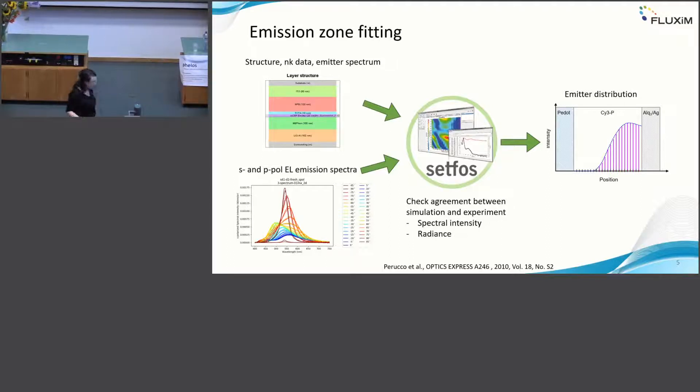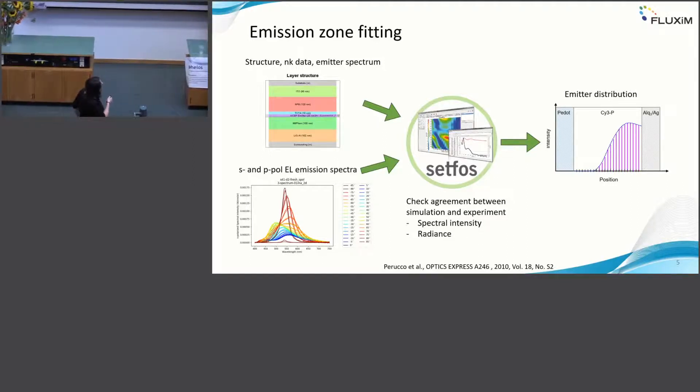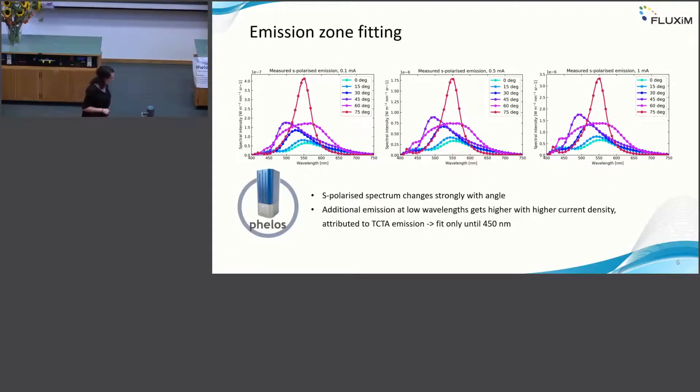Next thing would be to look at the full OLED and look at the emission zone. And this is how it works. You give in the stack definitions. Here are all the layers. Then you also feed in the target. This is the angular emission spectrum in S and P polarization. Then you need to also know the NK data and the emitter spectrum. So this I took from the previous PL measurements. Then you check, you simulate and internally there is a fitting algorithm described in this paper, which compares the target measured data with the simulation and then gives you out something like an emitter distribution.